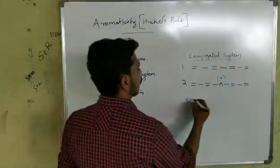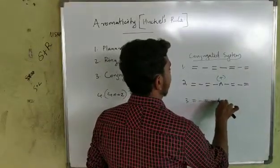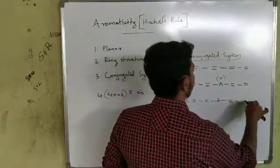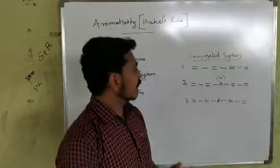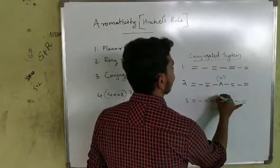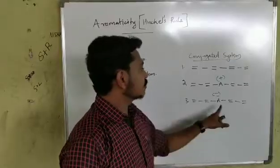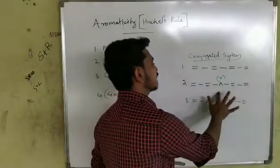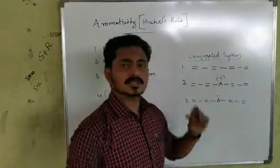The third type of conjugated system: double bond, single bond, double bond, single bond — the alternation is cut, but there is a lone pair of electrons on the atom at that position. A lone pair is also included under the conjugated system. So these are the three types of conjugated systems.